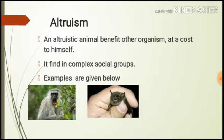A second example is vampire bats. They regularly collect blood and donate it to other members of their group who have failed to feed that night, ensuring they do not starve. So they are also acting altruistically.